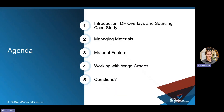What we'll do today is I'm first going to start with a quick introduction, explain what a digital factory is, what a digital factory manager is, and a specific use case that you could use it for. I want to go over the digital factory overlays, talking about what an overlay is and how the inheritance structure works in Apriori. Lastly, I'm going to connect this all to a sourcing case study. From there, we'll get into managing materials — how you can add materials — material factors, how you can apply certain factors to adjust your material cost based off your purchase volume. And lastly, we'll talk about wage grades, so how you can work with wage grades in Apriori when you're trying to adjust labor rates globally. We'll end with some questions.